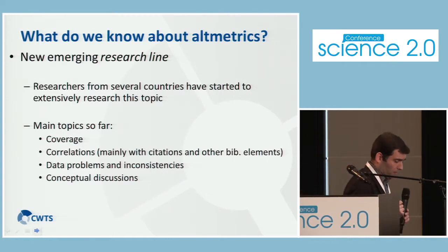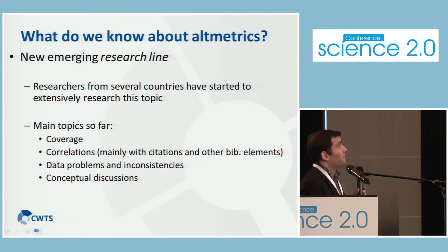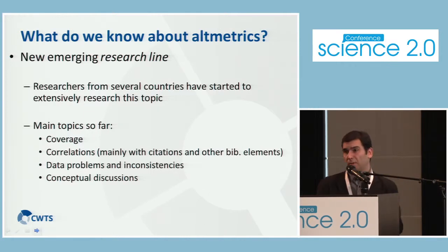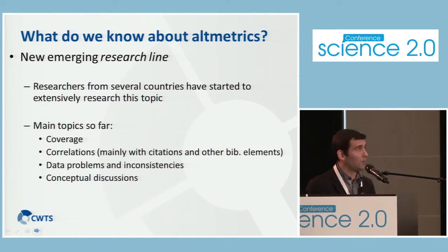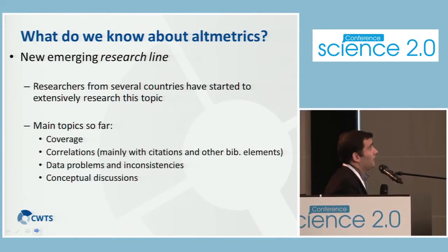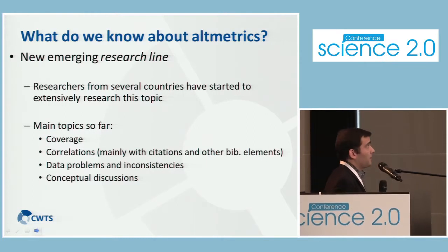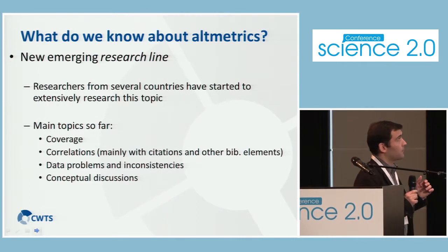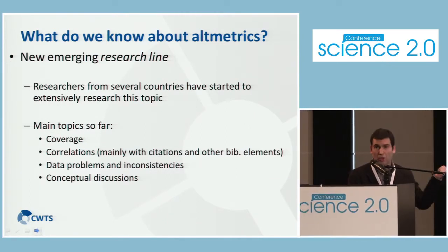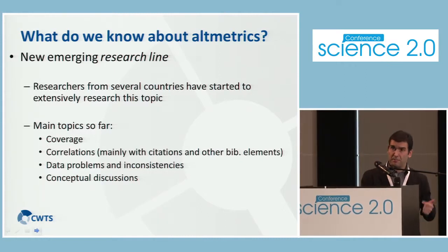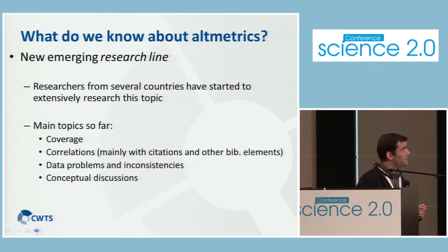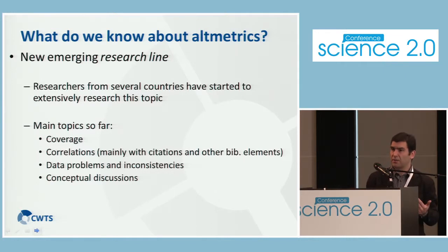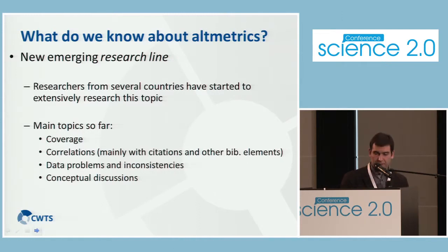There is a new emerging research line within the field of bibliometrics, with scientists from all over the world starting to look at this topic. The main areas discussed include coverage, correlations between Altmetrics and citations, analysis of data problems and inconsistencies, and conceptual discussions on their meaning and value.